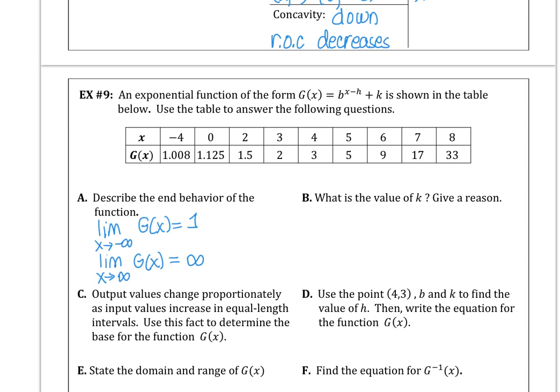For part b, what's the value of k? Well, k has to be 1. And the reason I know is as x goes to negative infinity, the y value is approaching 1. That means this is the horizontal asymptote. So it's an upper bound of the function. That's how we know the k value is 1.